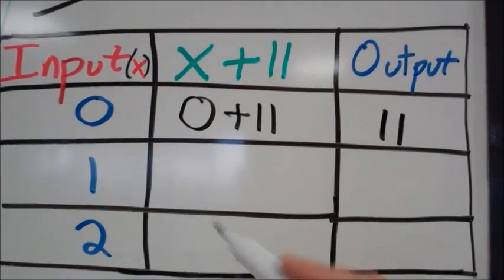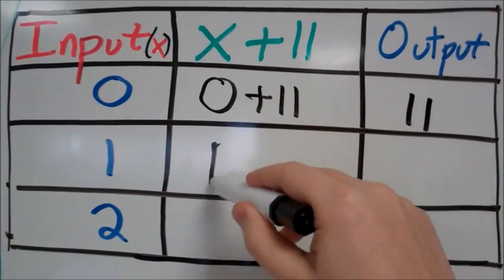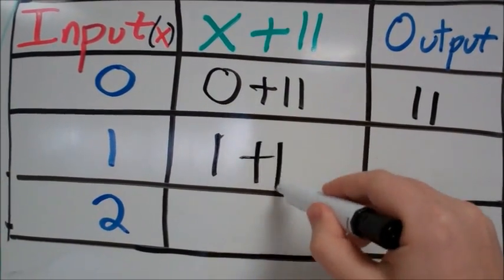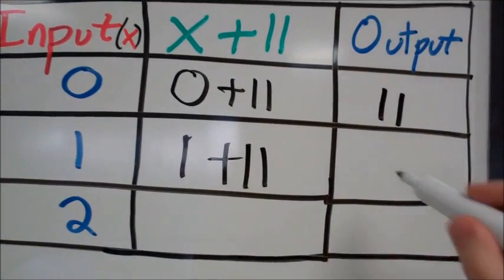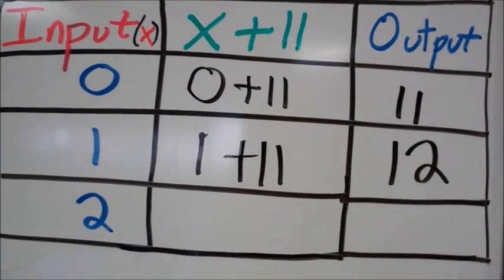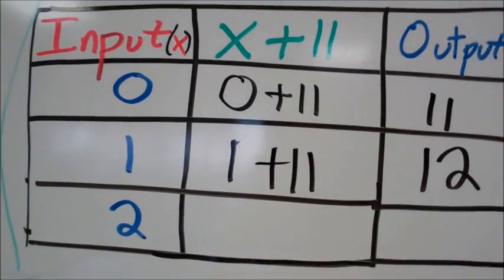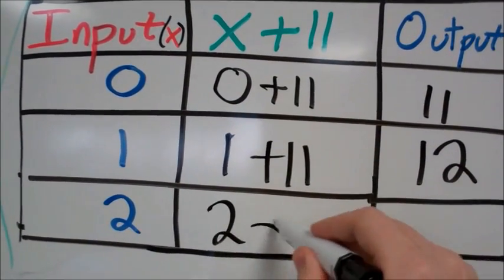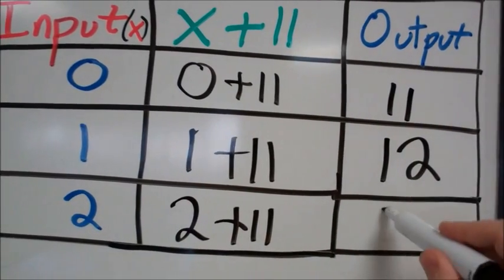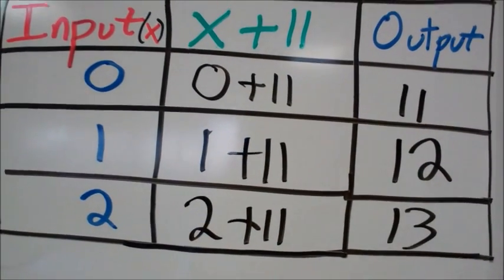Next one is 1 is our input. So now I'm going to have 1, substituting that in for x. 1 plus 11. 12 comes out. If we plug in 2 for x, we put in 2 into our machine. We have 2 plus 11, and 13 comes out at the end.